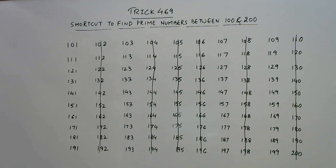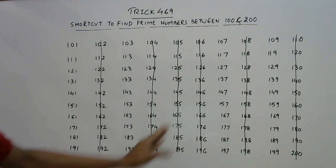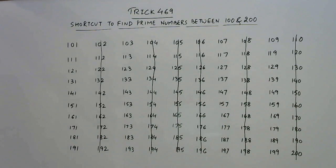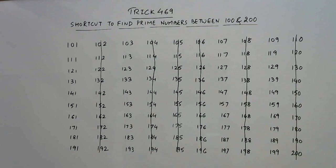After having done this, from the remaining four columns — that is 40 numbers — 21 numbers are prime. So we need to strike off the remaining composite numbers, and for this we will adopt a specific procedure.